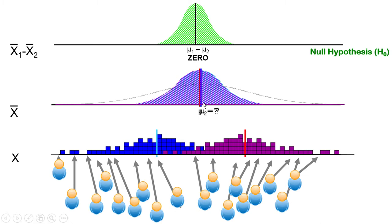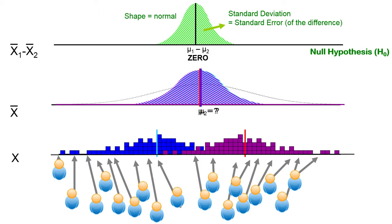The mean of that distribution is zero, because if these two population means are the same, the average difference between sample means is zero. The null hypothesis says the mean of this distribution of differences is zero. The shape is normal — or t, really — we use t to estimate it, and the standard deviation is the standard error of the difference. We calculate the difference between our two sample means, and we see where that fits in the sampling distribution of all possible differences. We have one thing and a sampling distribution of that thing — now we can do a direct comparison.